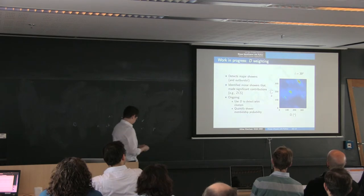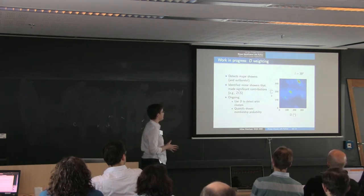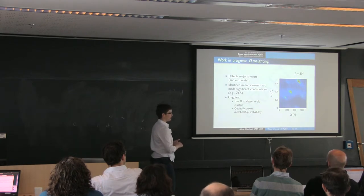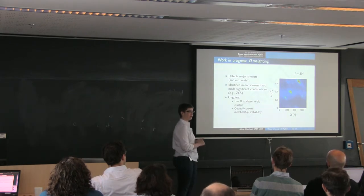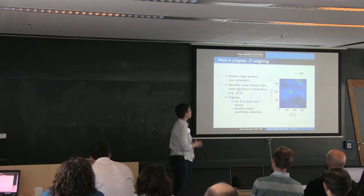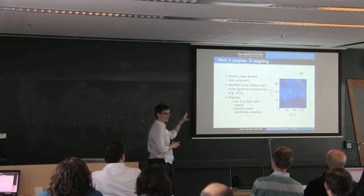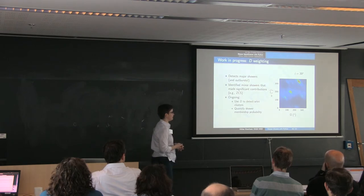So that is the algorithm so far. It's worked out nicely for us. It's been detecting the major showers. It's allowed us to build a list of about two dozen showers that we see in the AllSky, in our AllSky network. It's also helped us to identify minor showers like those Zeta Cassiopeids that we had been previously overlooking.